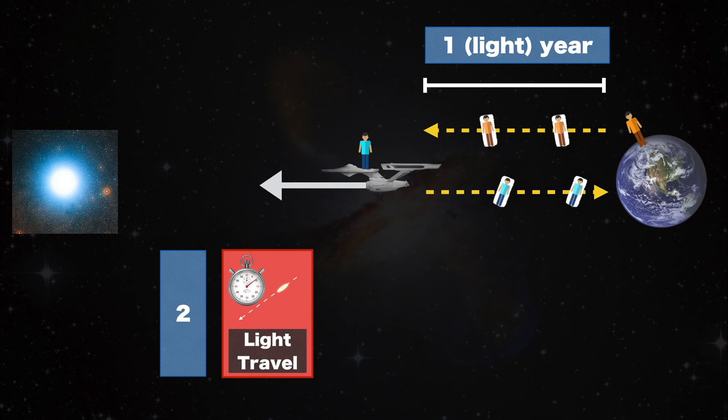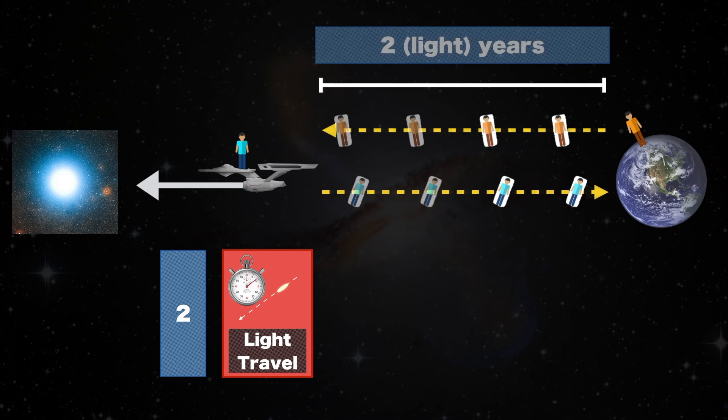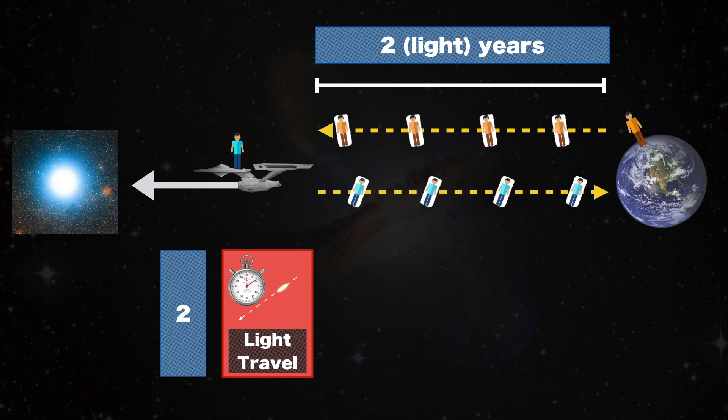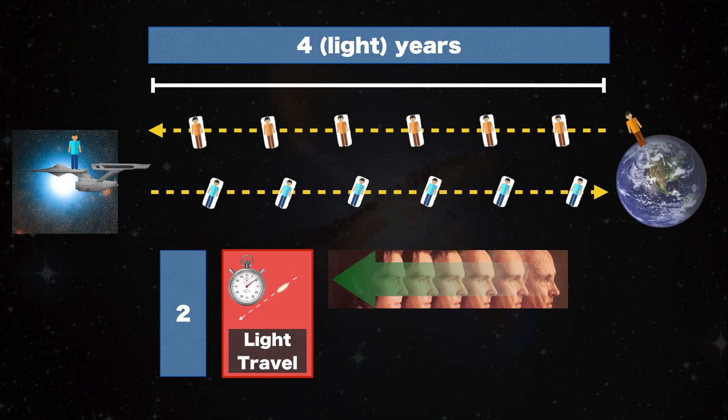Second, there is the sheer time it takes light, or in this case information, to travel. As the distance between the twins increases, the images they send each other need increasingly long time to arrive.